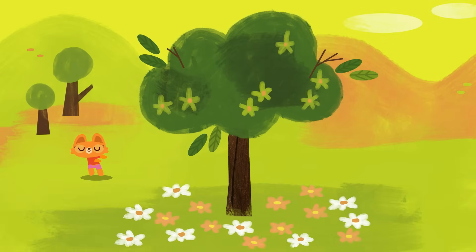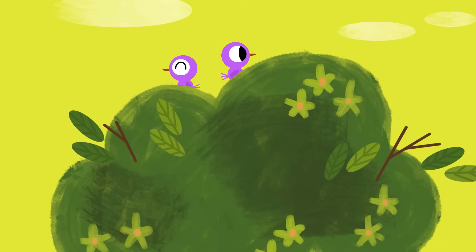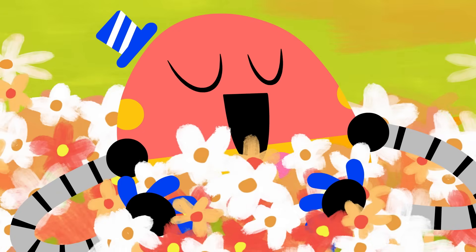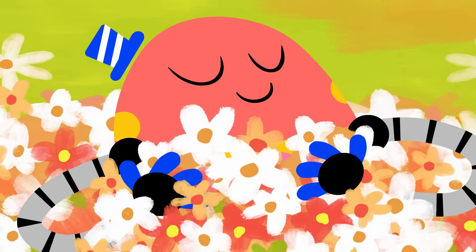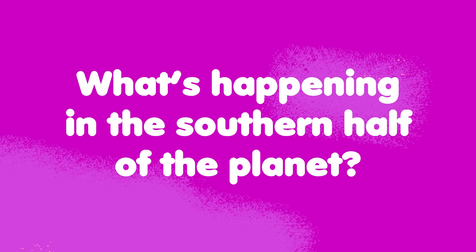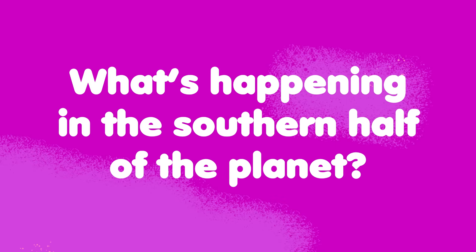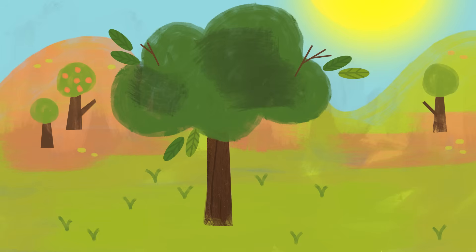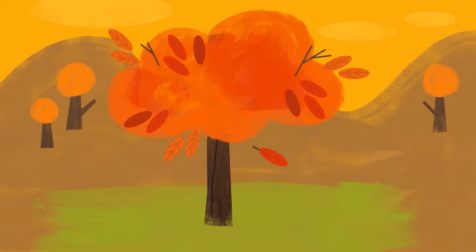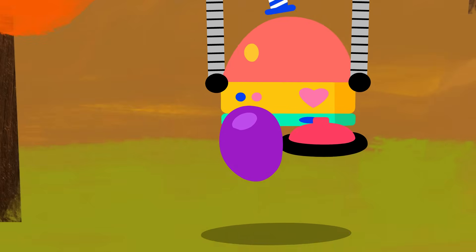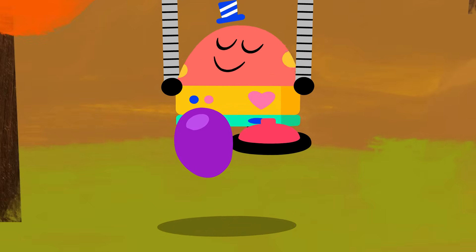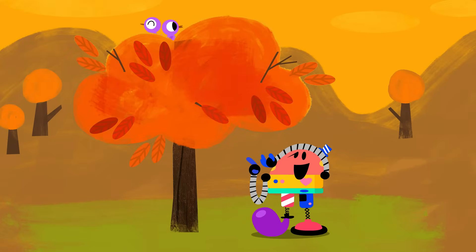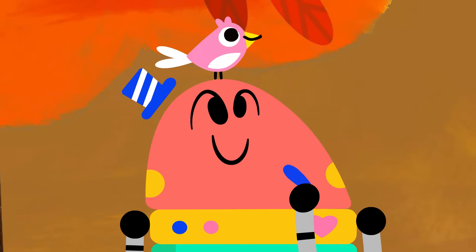The Earth spins with a slight tilt — it leans a little to one side. As it makes its way around the sun in 365 days, one half receives more sunlight while the other gets less. Here in the northern half, the short days of winter start to get longer and longer. With more sunlight, spring comes next — the season when flowers bloom and trees grow their leaves. Meanwhile, in the southern half, the long days of summer get shorter and shorter, and the next season is fall, when leaves change color.